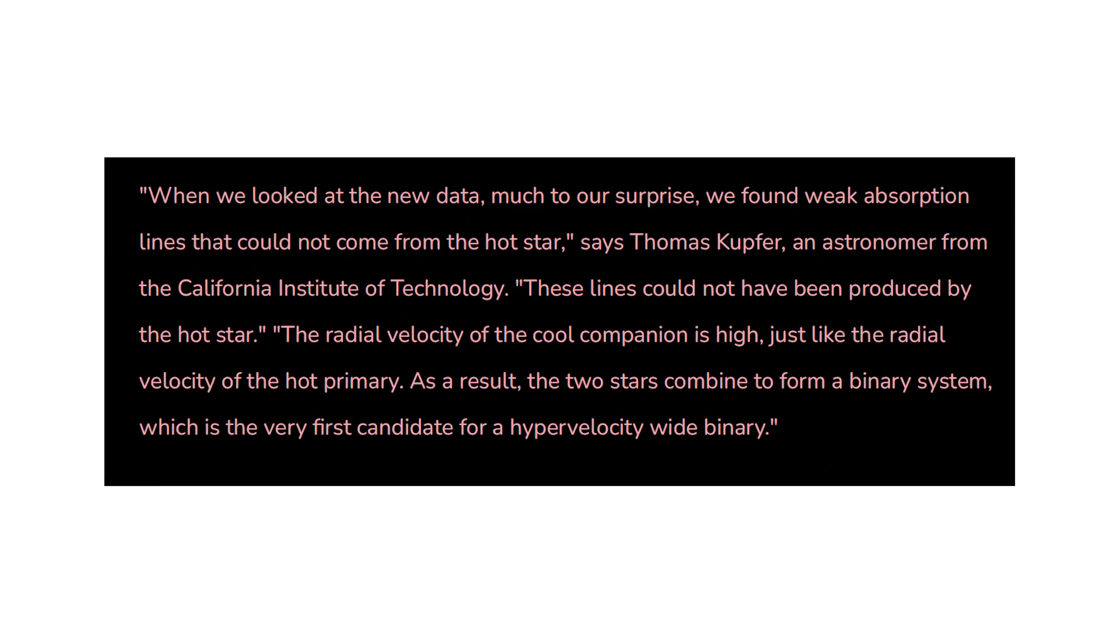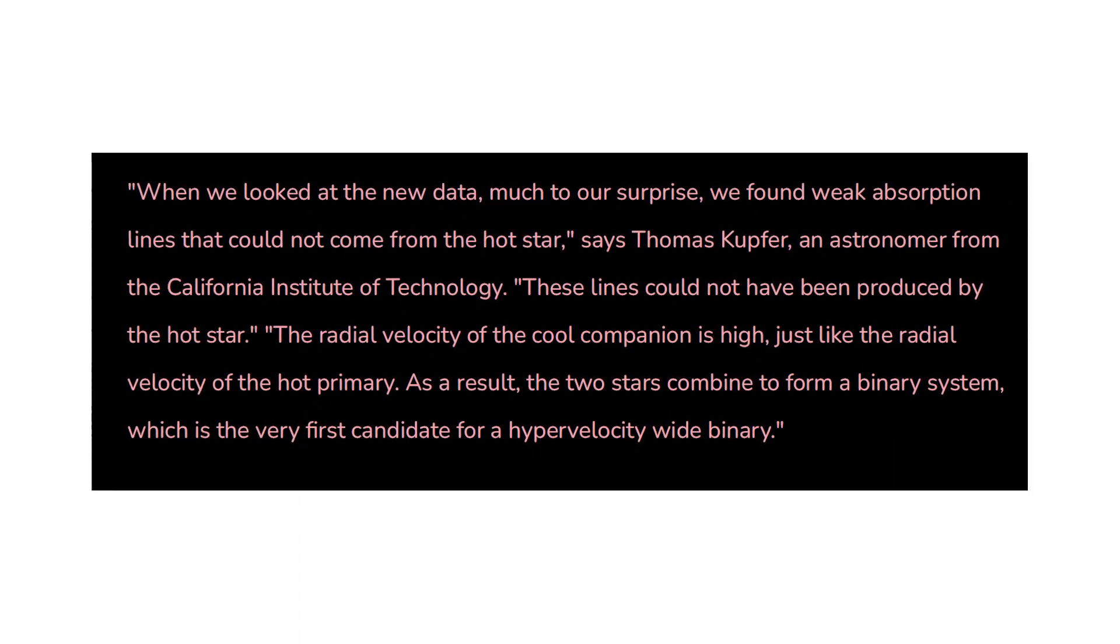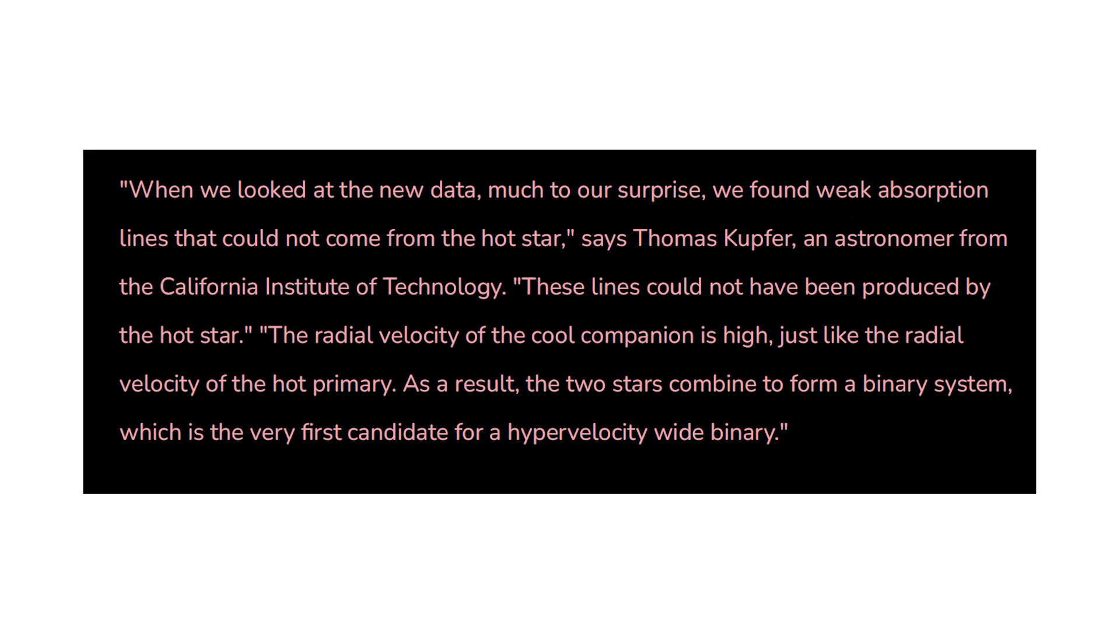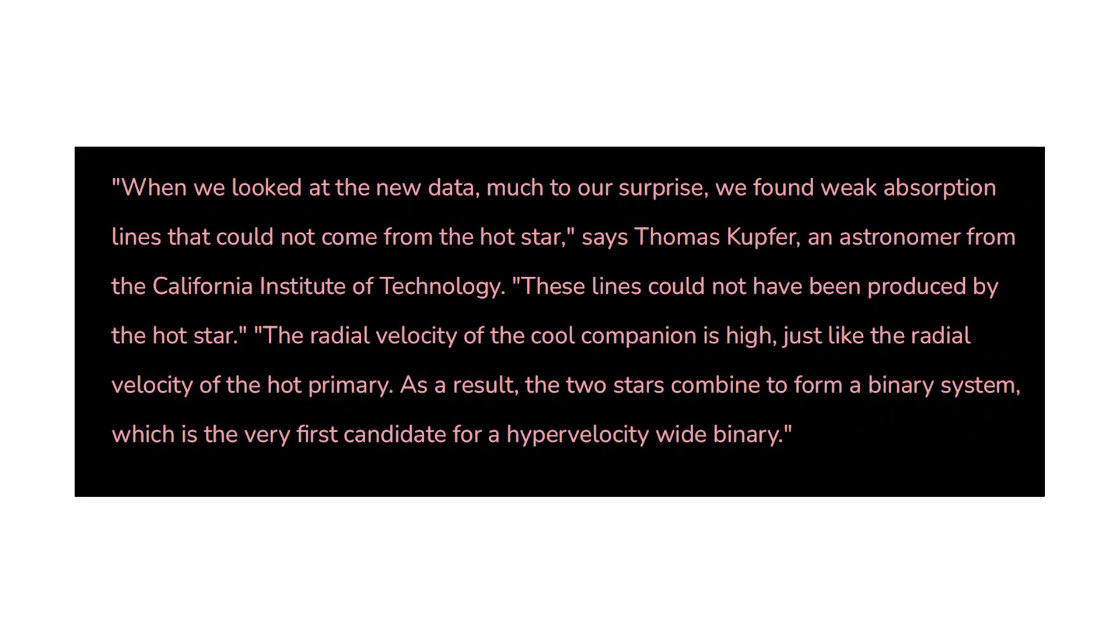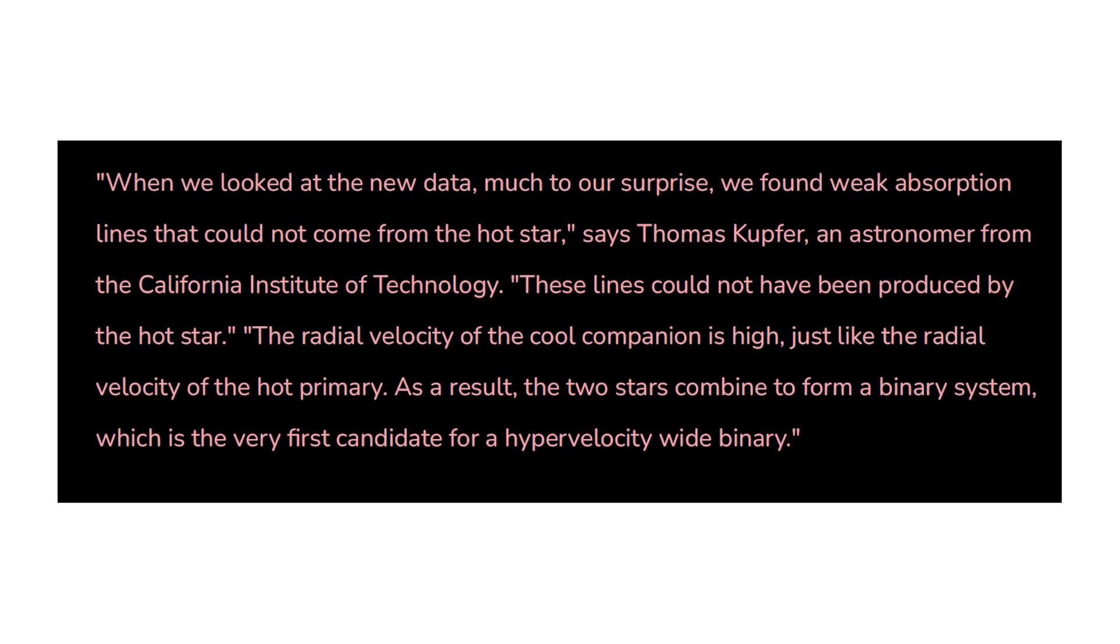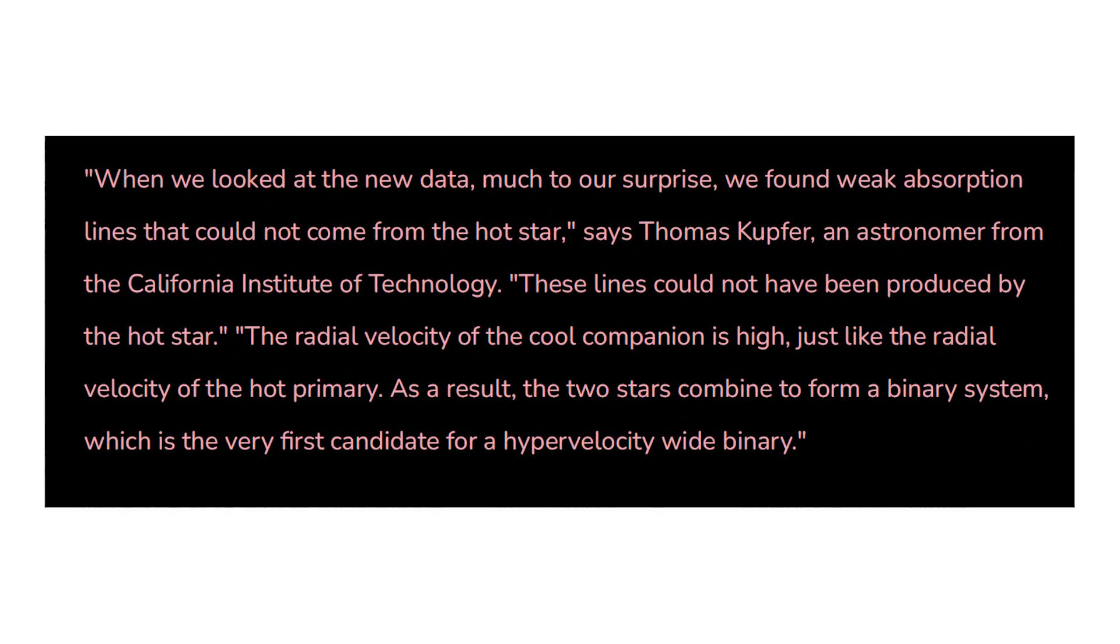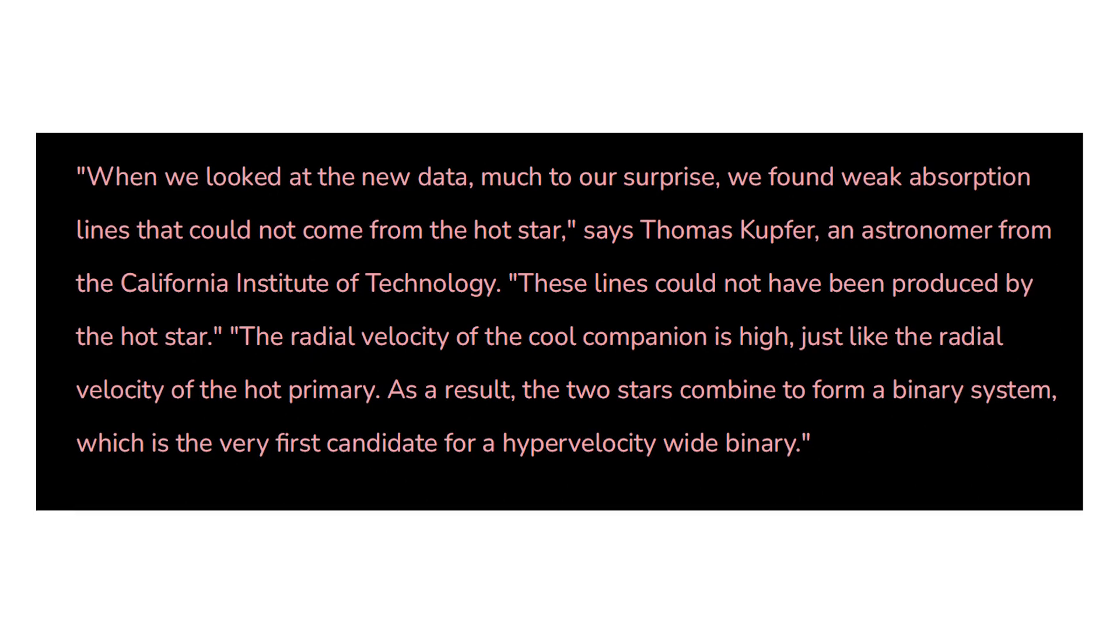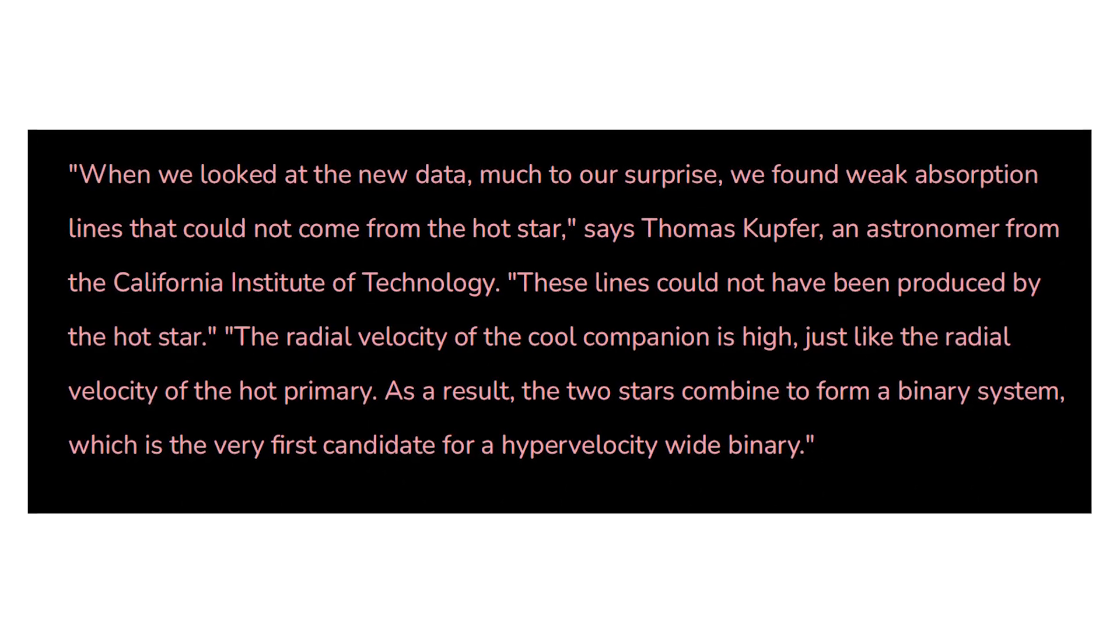Says Thomas Kupfer, an astronomer from the California Institute of Technology. These lines could not have been produced by the hot star. The radial velocity of the cool companion is high, just like the radial velocity of the hot primary. As a result, the two stars combine to form a binary system, which is the very first candidate for a hypervelocity-wide binary.